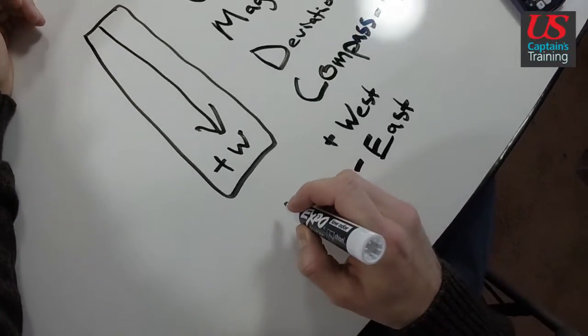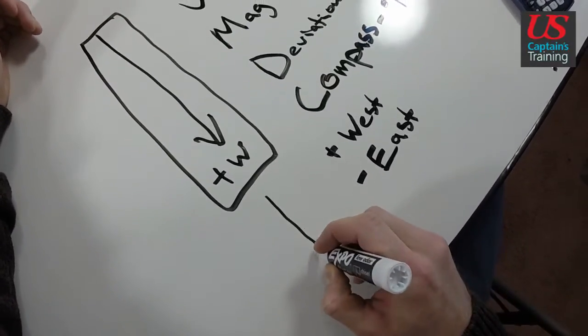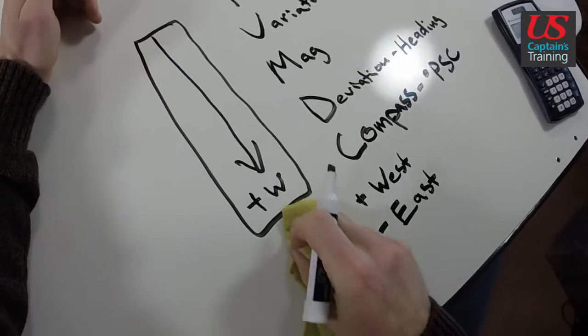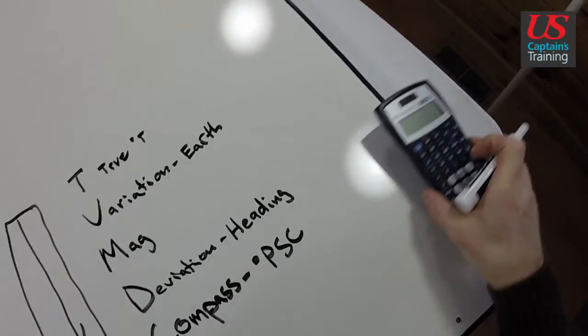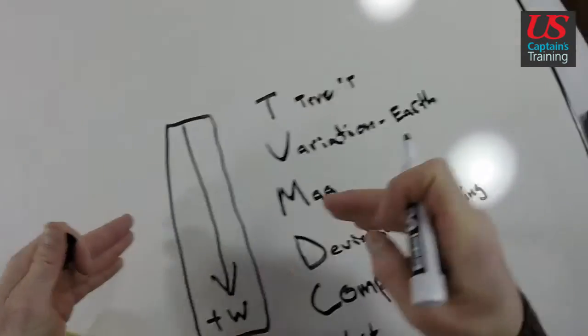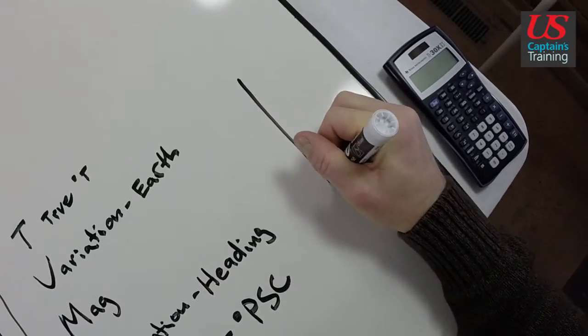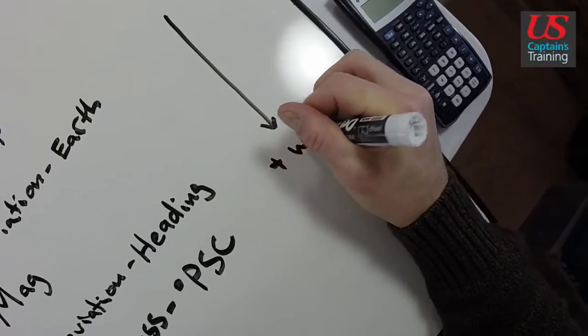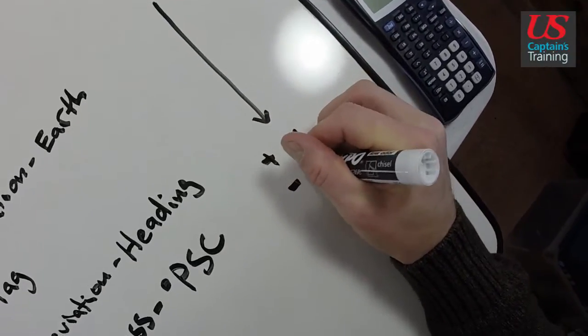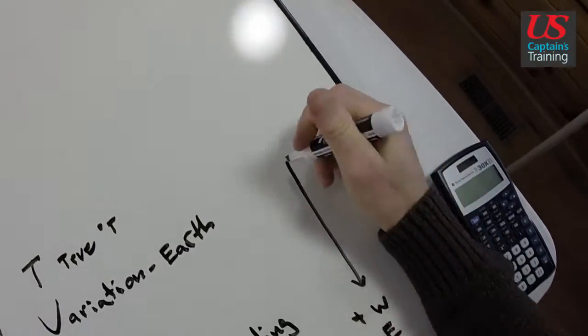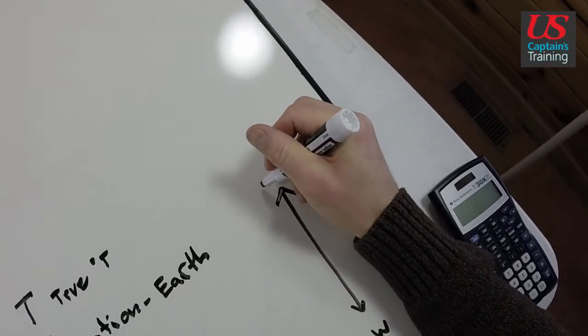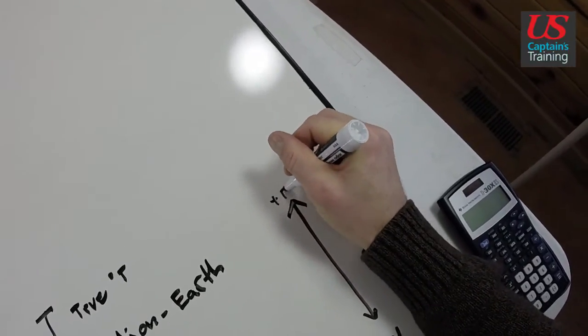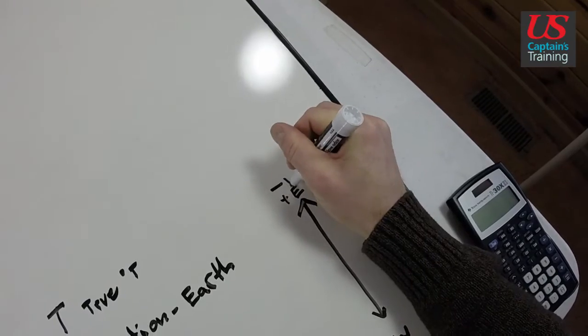You can say this. Let me just draw it right here. No, let me draw it bigger over here. So, with this drawing, let me show you what you can take from this. If you're going down from true to compass, you add west and subtract east. If you're going up, you do the opposite. You add east and subtract west.